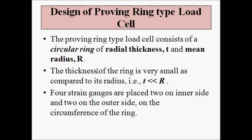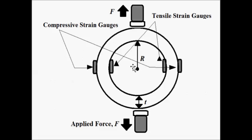The proving ring type load cell, as the name suggests, consists of a circular ring of radial thickness t and mean radius R. The thickness of the ring is very small as compared to its radius. This is the general configuration of the proving ring type load cell — it has a radial thickness of small t and a radius of capital R.